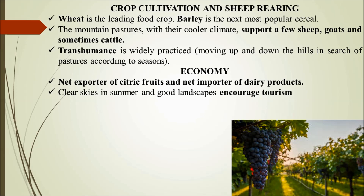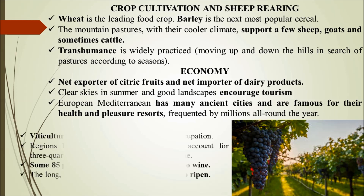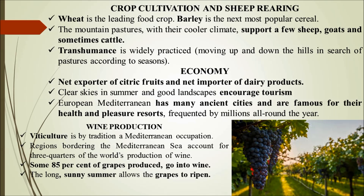Clear skies in summer and a beautiful landscape encourage tourism. The European Mediterranean area has many famous health and pleasure resorts attracting millions of tourists year-round. Wine production leads the world here — viticulture is by tradition a Mediterranean occupation. Regions bordering the Mediterranean account for three-quarters of the world's production of wine, and about 85% of grapes produced go into wine. The long sunny summer is the main reason grapes ripen so well.